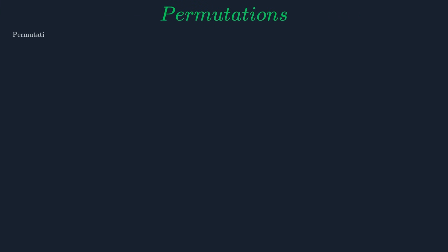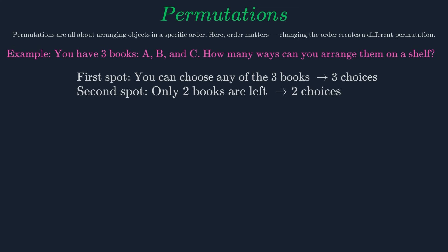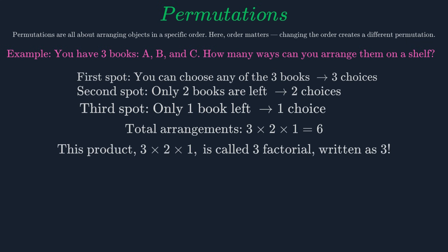Now let's talk about permutations. A permutation is an arrangement of objects in a specific order—the order matters. Let's say you have three books: A, B, and C. How many different ways can you arrange them on a shelf? For the first spot you have three choices, for the second you have two choices left, for the third you have only one choice. So the total number of arrangements is 3 × 2 × 1, which is 6. This product—3 × 2 × 1—is called 3 factorial, written as 3!.